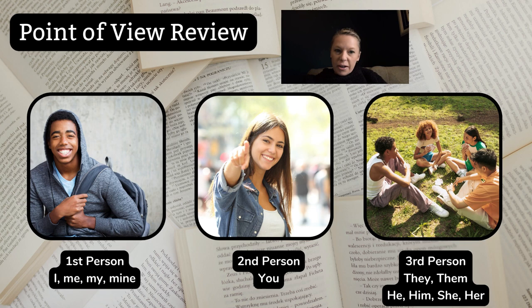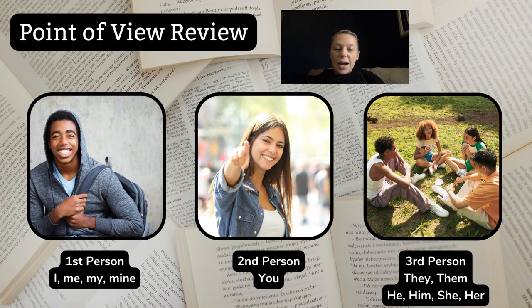The third kind of point of view is called third person, and it's when somebody outside of the story — a narrator who is not an actual character — is sharing the story events. You'll see pronouns like they, them, he, him, she, and her. We get to see different character experiences, perspectives, and thoughts. We can even see what's happening in a couple of different places at the same time with third person.